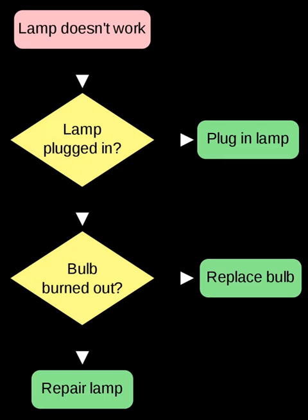Specifically, the Hamiltonian path problem and some versions of the set-cover problem are a few NP-complete problems which have been solved using this computational model so far. This model of computation has also been shown to be computationally universal or Turing-complete.